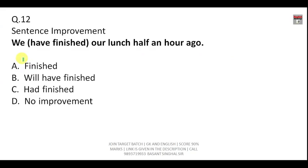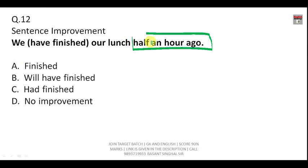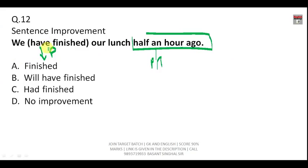Sentence: 'We have finished our lunch half an hour ago.' Since 'half an hour ago' indicates past tense, you should never use 'have' which indicates present perfect. The correct answer is simply 'finished' — 'We finished our lunch half an hour ago.'